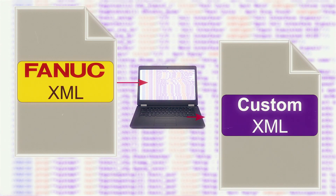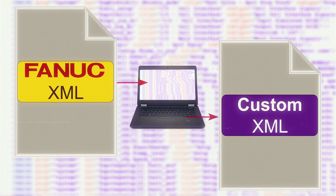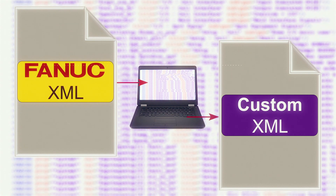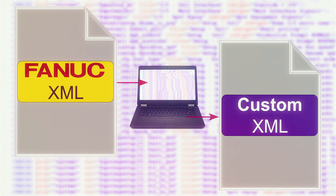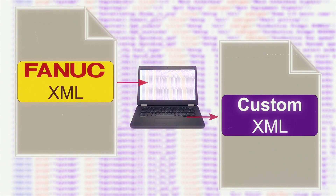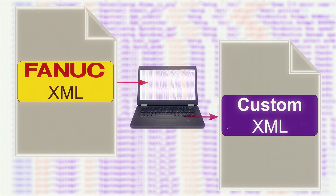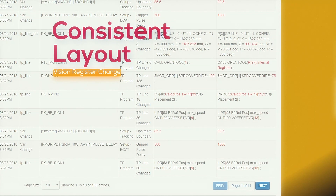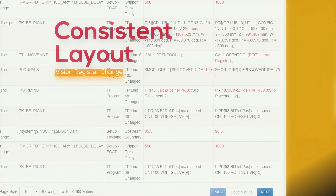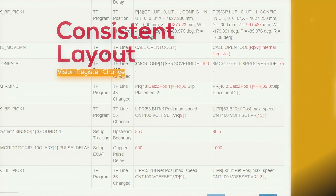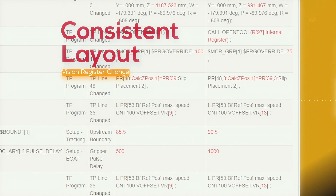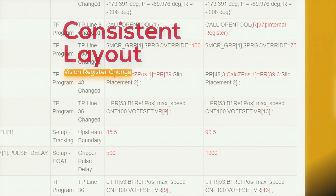If you like, you can modify this file, tailoring it to your specific needs to track your own custom variables. Process Change screens, of course, have the same layout regardless of the production application.